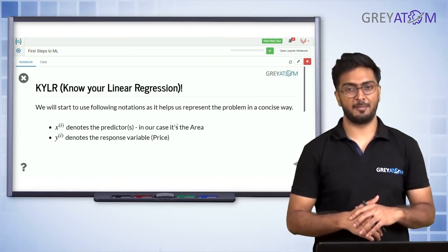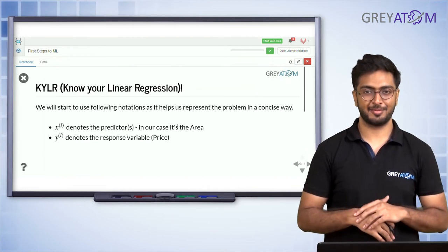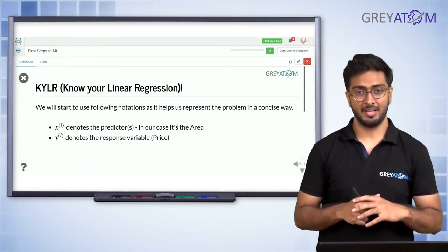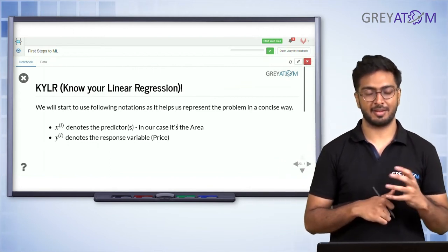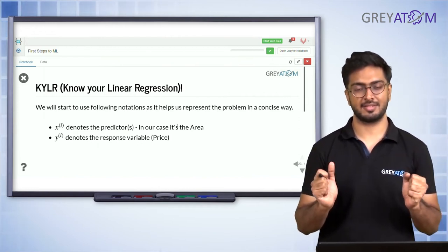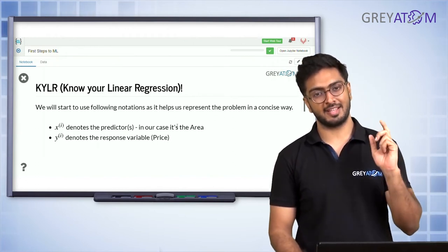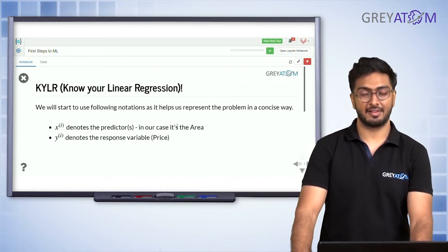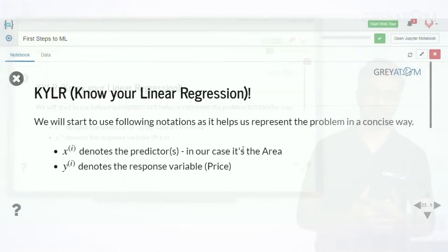That's the entire concept of linear regression in a short and simple example. You can solve for beta 0 and beta 1 using a matrix-based equation — that's one way. The second way, which we'll discuss right after this, is called gradient descent. Taking derivatives, equating them to zero, and solving multiple linear equations can be tough, especially with many variables. So we look for something more intuitive and easier to handle with many features.